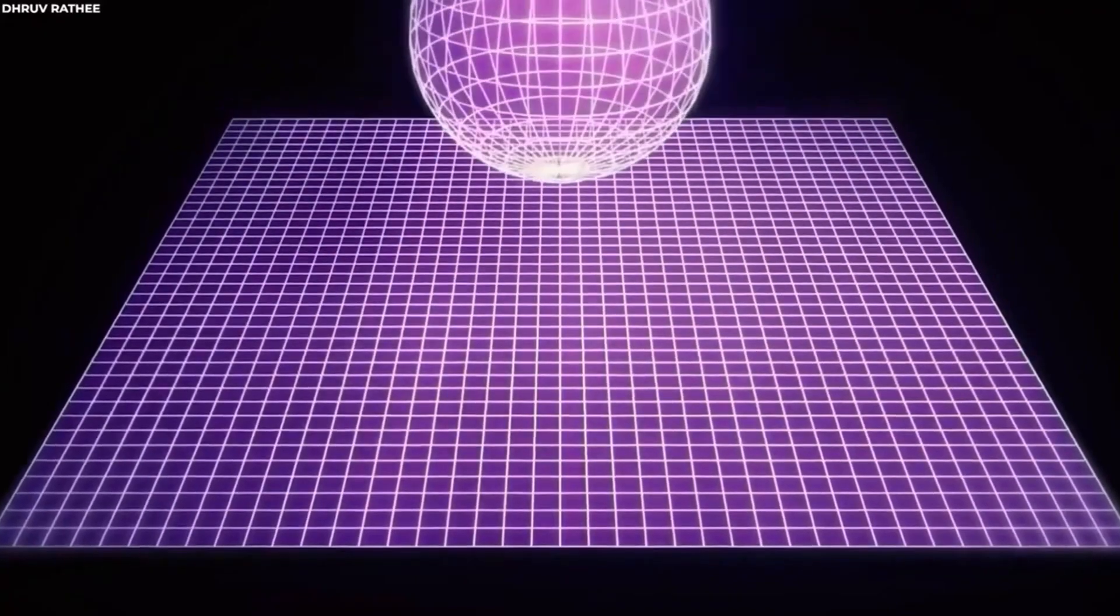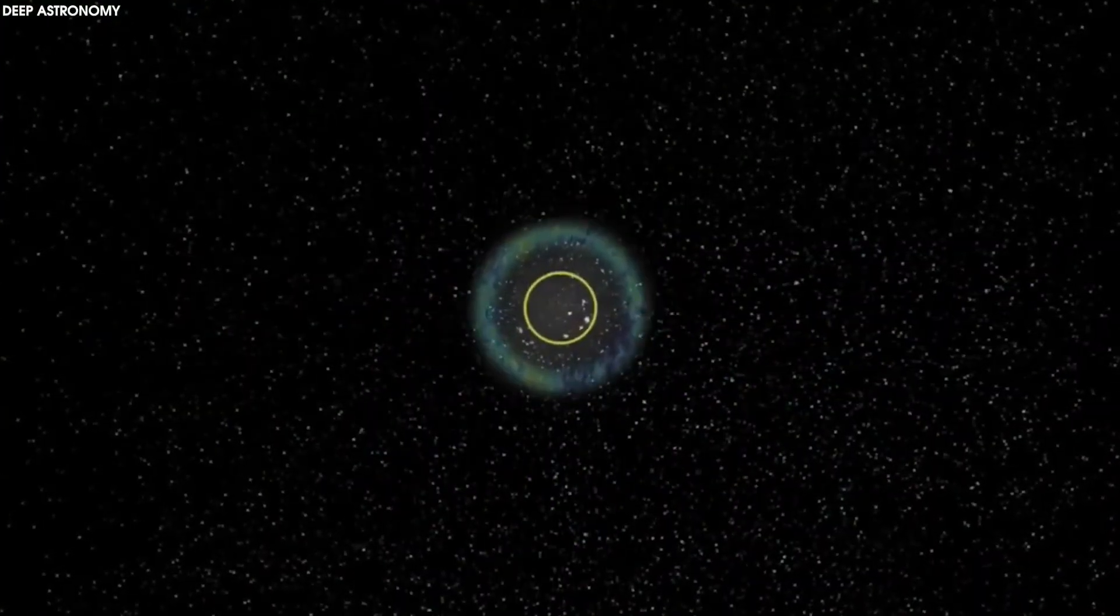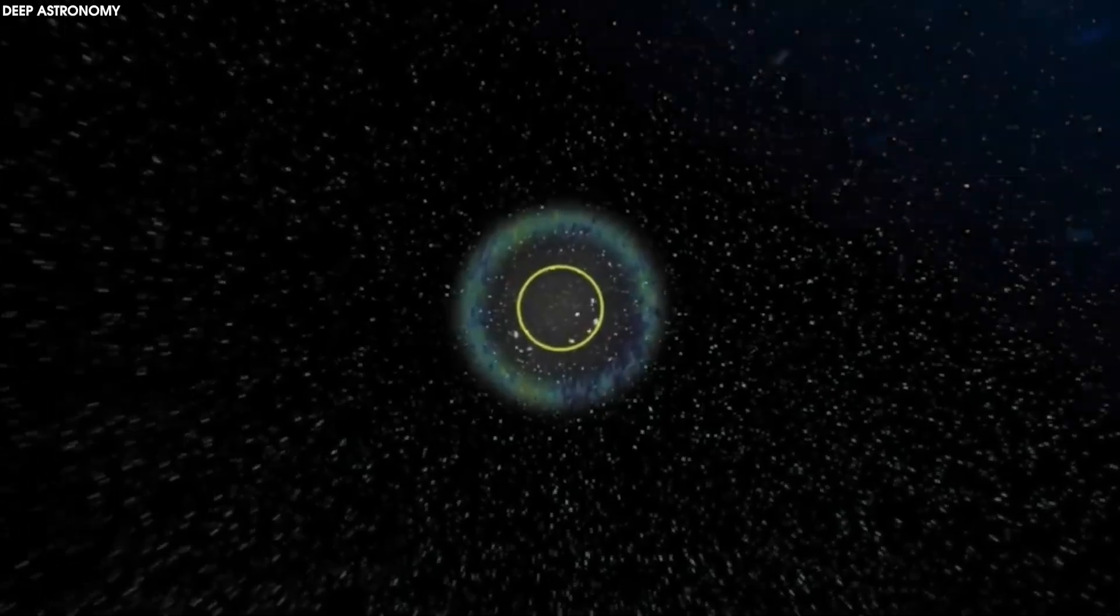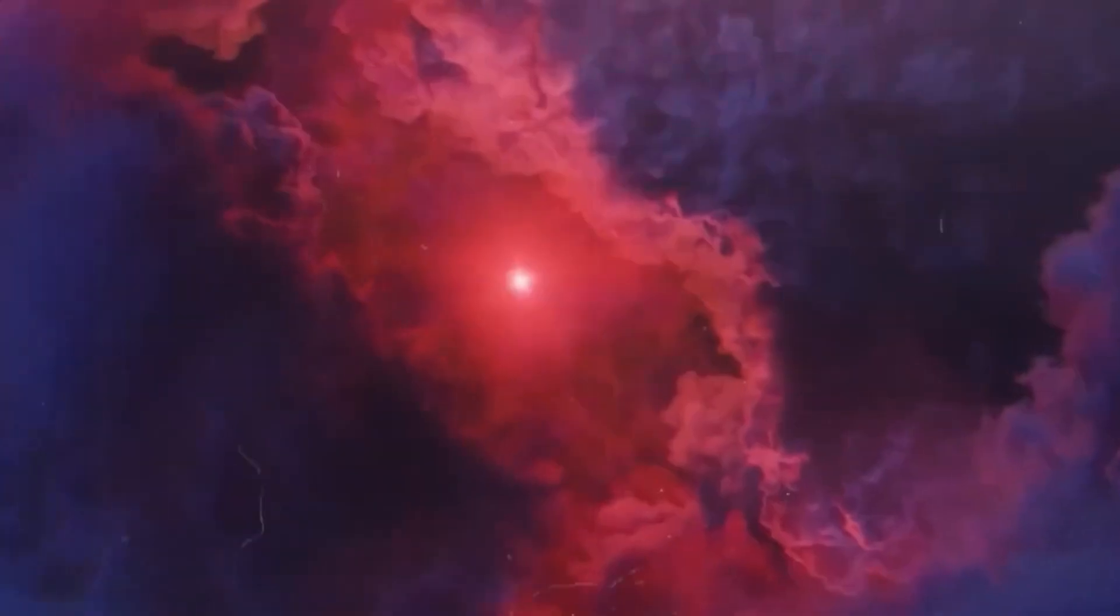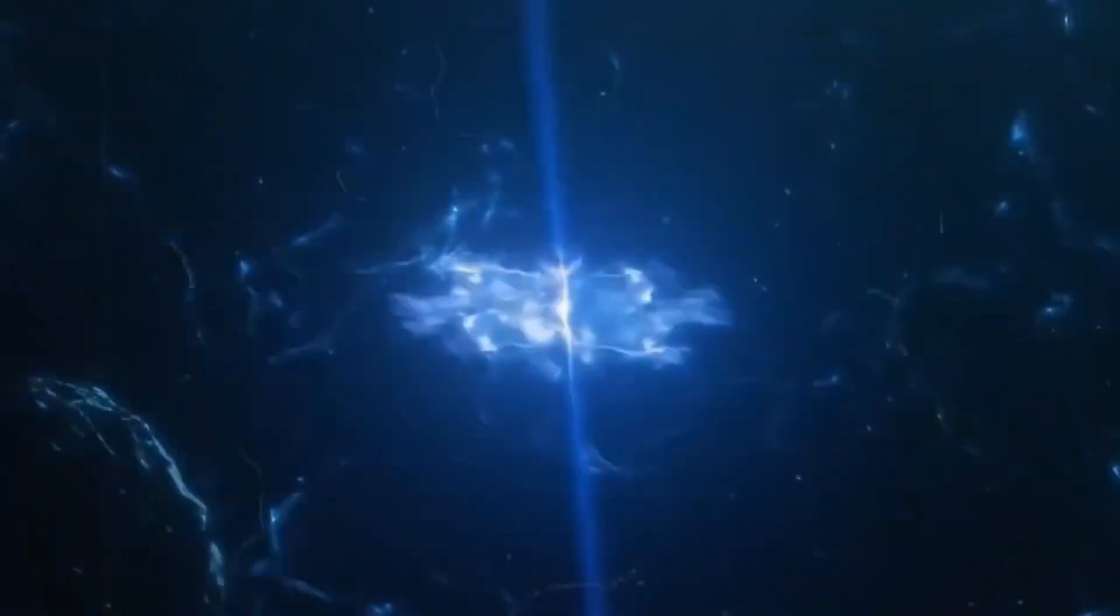The small Magellanic Cloud contains lower concentrations of elements heavier than hydrogen or helium, which astronomers call metals, compared to the Milky Way. Since dust grains in space are composed mostly of metals, scientists expected there would be low amounts of dust and that it would be hard to detect.